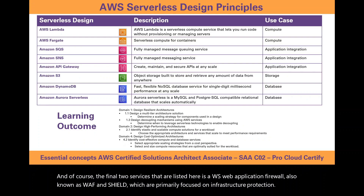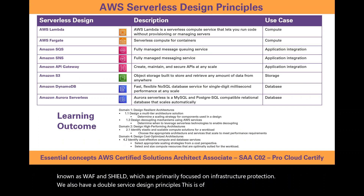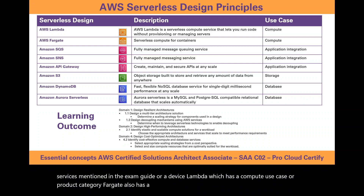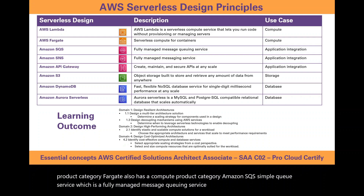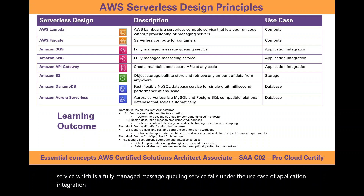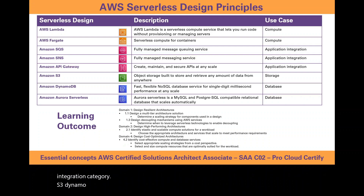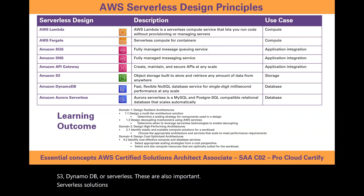For AWS serverless design principles, the services mentioned in the exam guide include AWS Lambda and Fargate (compute), Amazon SQS and SNS (application integration), Amazon API Gateway (application integration), and S3, DynamoDB, and Aurora Serverless as additional important serverless solutions. These are important for answering questions related to Domain 1, Domain 2, and Domain 4.